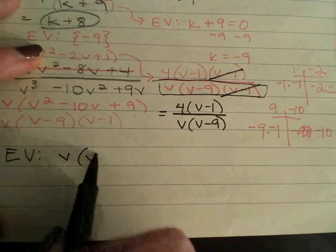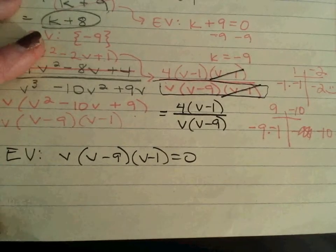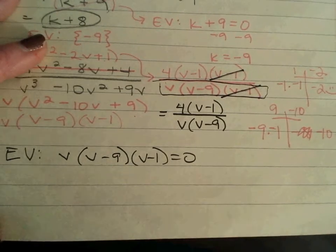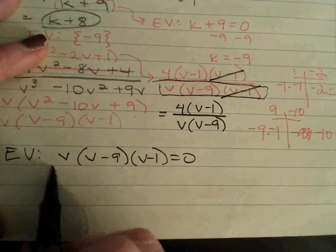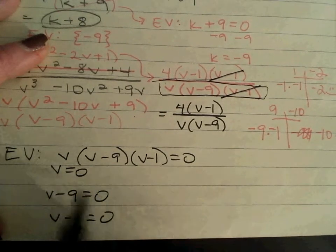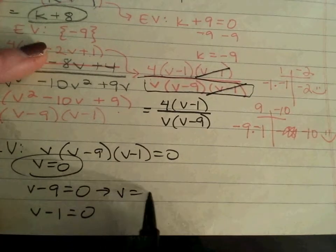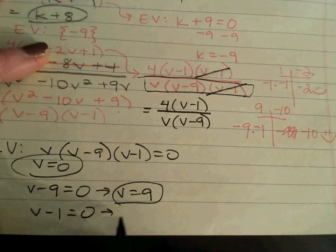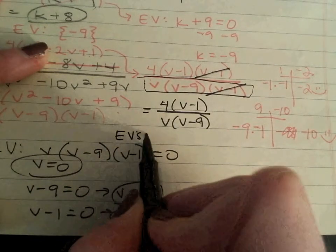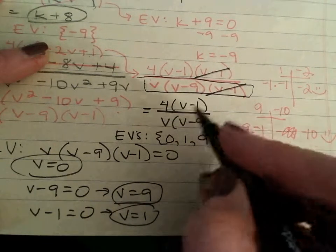So, I'm going to write that out. What makes this equal 0? Since there are three factors here, there are going to be three things that make this denominator potentially equal 0. So, we set each one equal to 0. V equals 0, v minus 9 equals 0, and v minus 1 equals 0. Done. Add 9 to both sides here. Add 1 to both sides here. So, our excluded values here would be 0 – I'm going to write them in order – 0, 1, and 9.